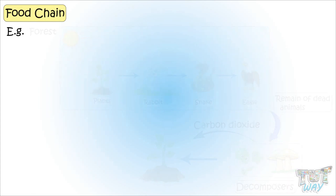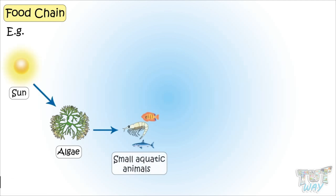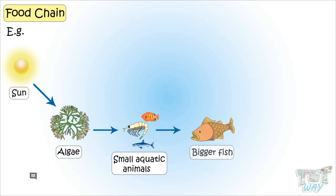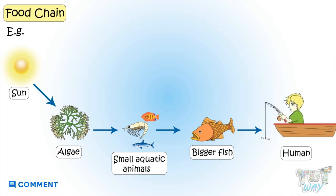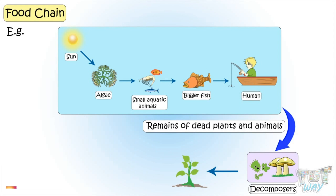Here is another example of a food chain. Algae, a green color aquatic plant, grows using the energy from the sun. Algae is eaten as food by many small aquatic animals and fish, which are then eaten by bigger fish, and fish is hunted by humans for food. The waste material from all animals and plants is decomposed by microorganisms as nutrients and carbon.